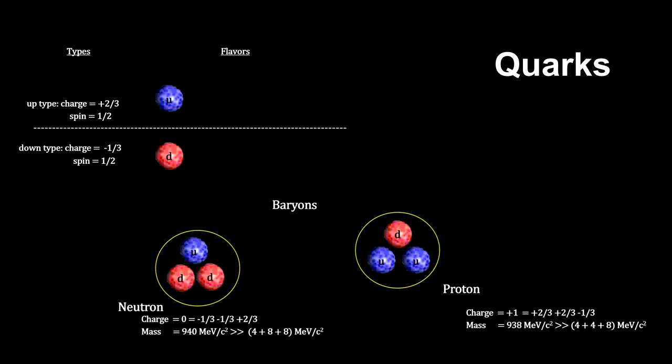Note that the sum of the quark masses falls far short of the mass of the baryon. This indicates that there is a lot more going on inside the proton than we've seen so far.